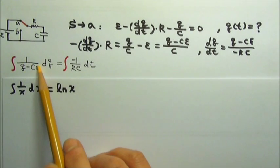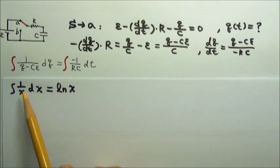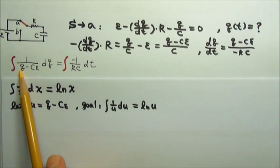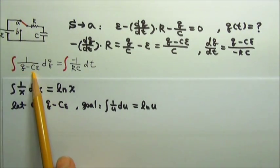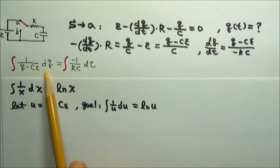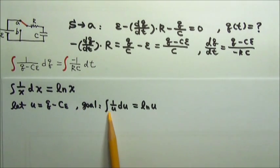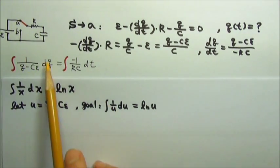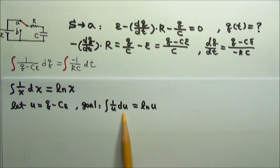We would like these two to be exactly the same, then we know how to integrate it. In math classes, people usually say, okay, we'll let q minus Cε equals to this u. And then we're hoping to change this equation to the integral of 1 over u, du, or something like that, so that we can do the integral. Of course, this is 1 over u, but how do we turn the dq into du?